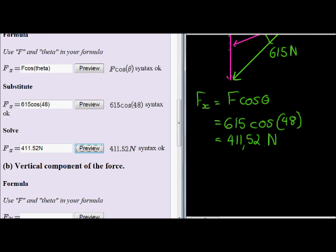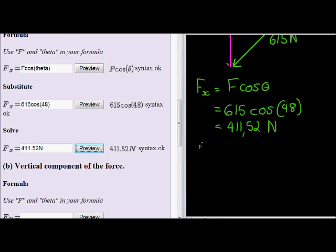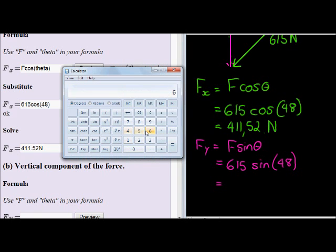We notice it's the component that's opposite the angle, and for opposite we use sine. So it's going to be the y is equal to F sine of theta, and that gives me 615 sin of 48.